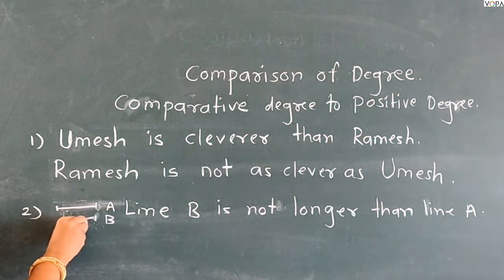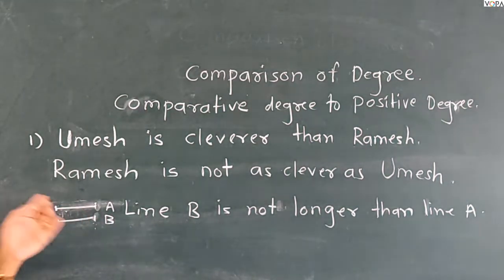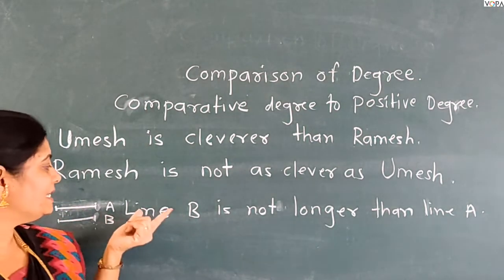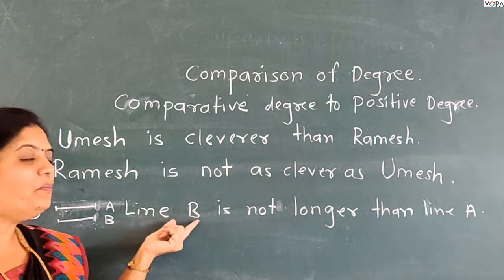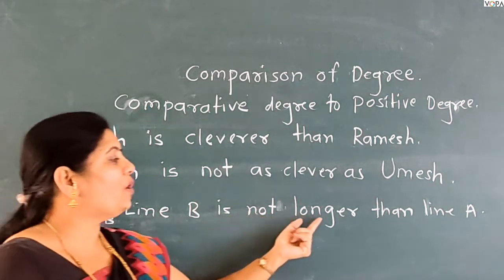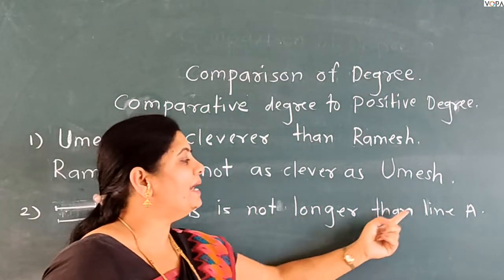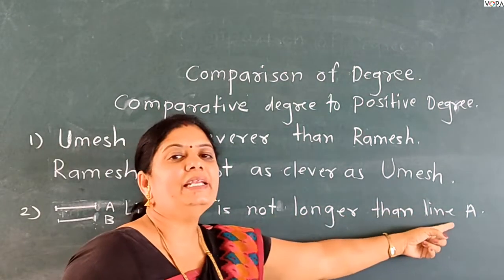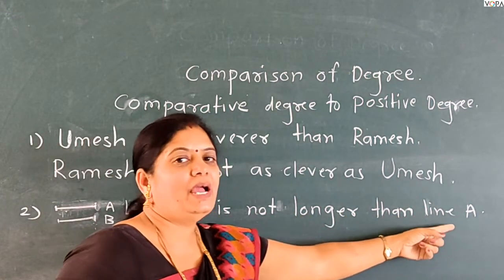Now the second example — line A and line B. Both lines are equal. Look here.